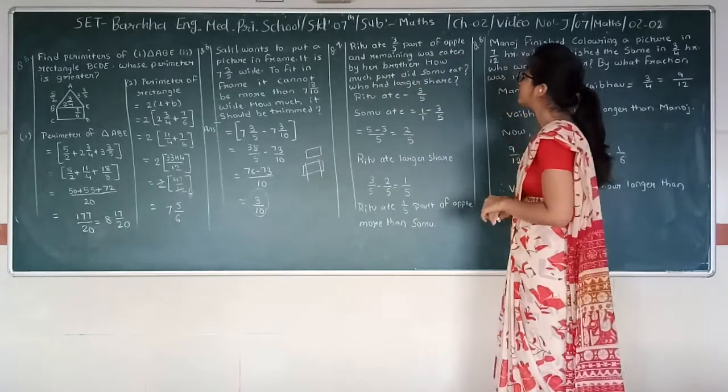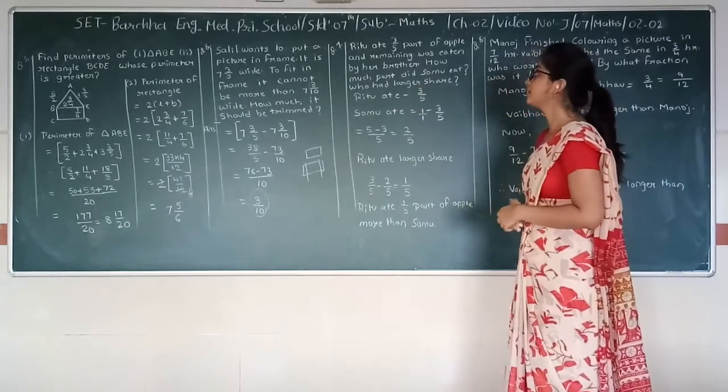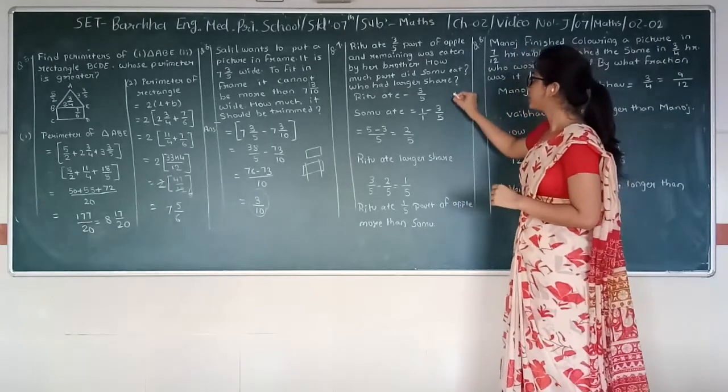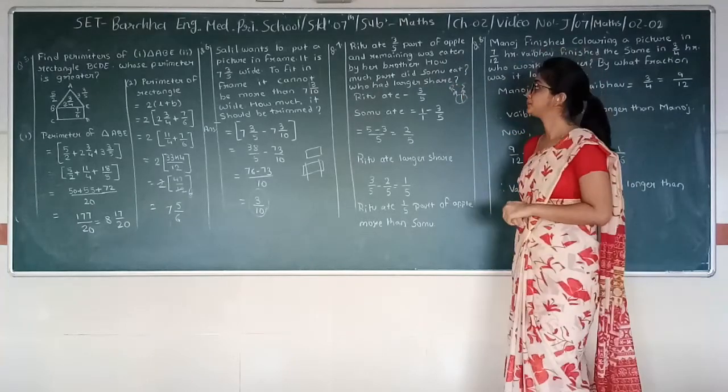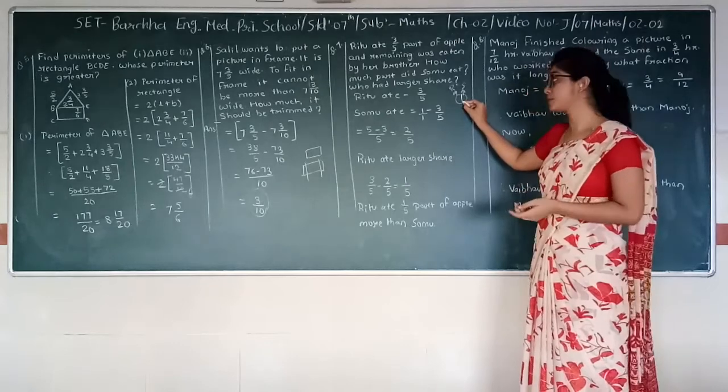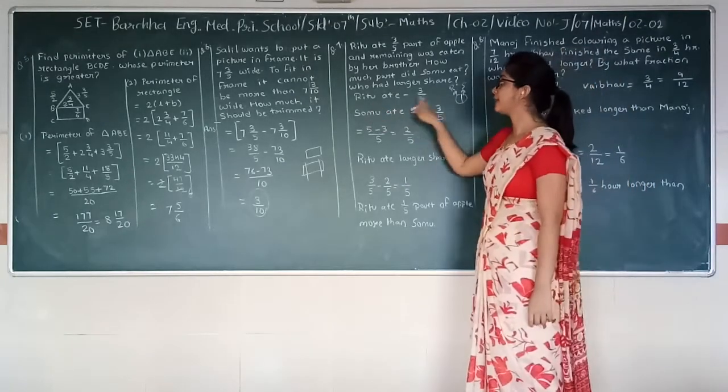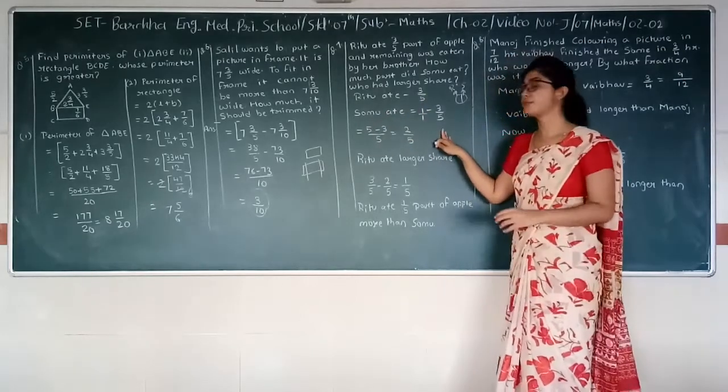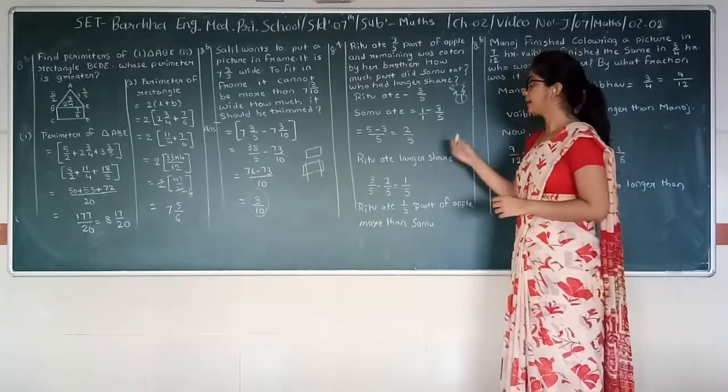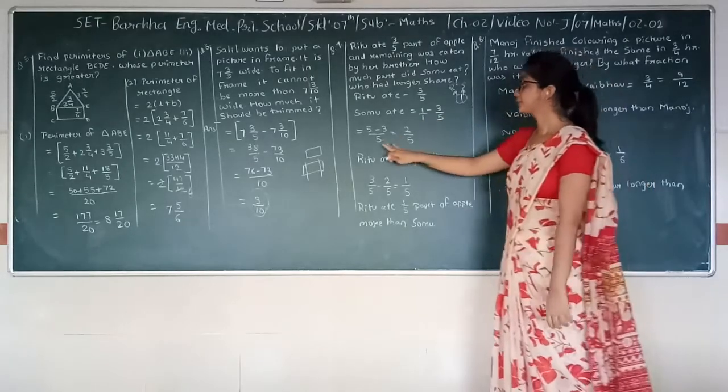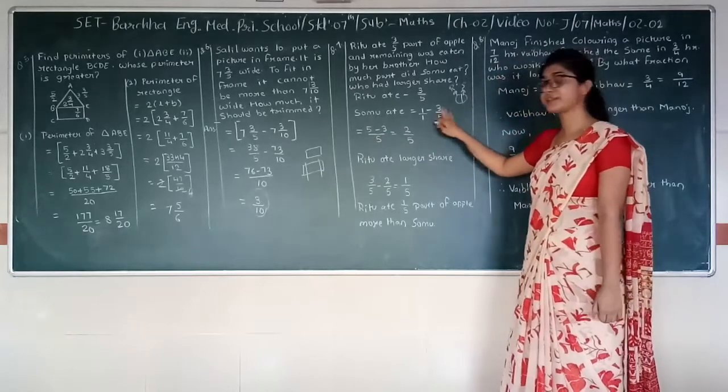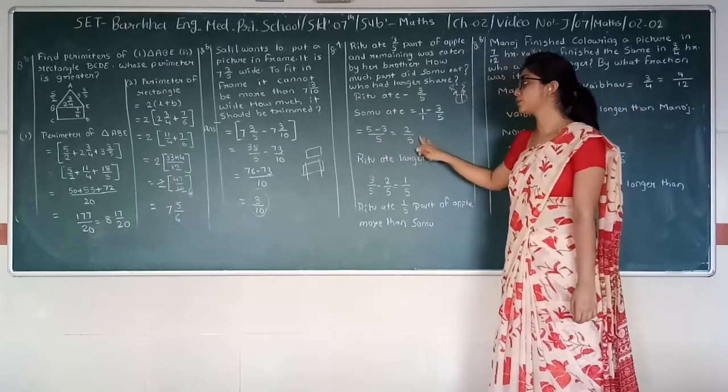Question number 7. Ritu ate three-fifth part of apple and remaining was eaten by her brother. It means we have one full apple out of which three-fifth part was eaten by Ritu. This portion was eaten by Ritu and remaining by her brother. So how much part Sonu ate, his brother ate, and who had larger portion? Ritu ate three-fifth. Sonu ate one minus three upon five. One is total apple. One minus three upon five. Five divided by one multiplied by one is equal to five. Five divided by five multiplied by three is equal to three. Five minus three is equal to two upon five.